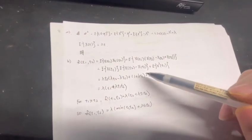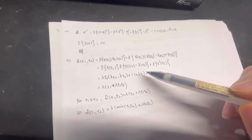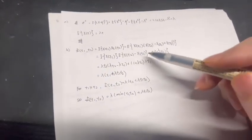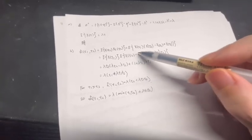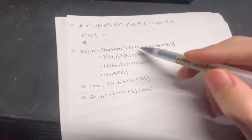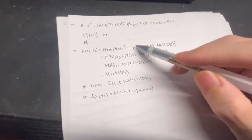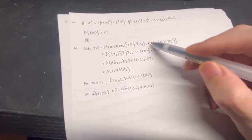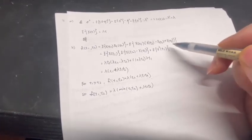This will equal the expected value of X(t1) times (X(t2) - X(t1) + X(t1)).